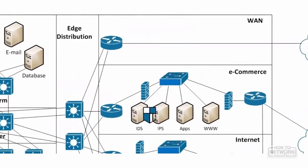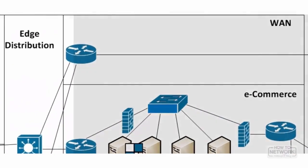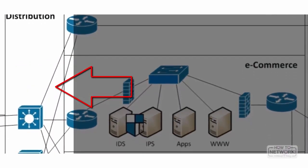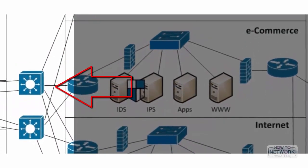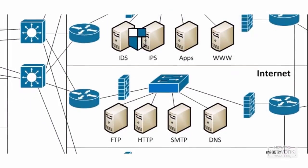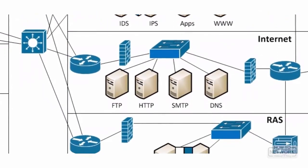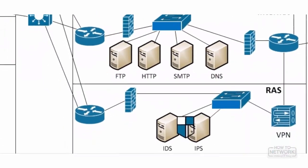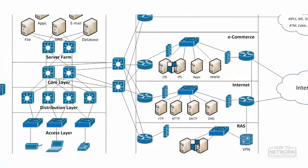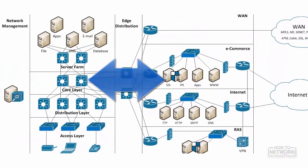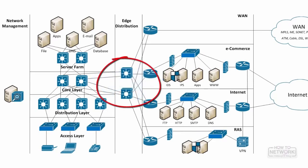The enterprise edge is the demarcation point between internal and external facing networks, with redundant switching infrastructure connecting into the core and all externally facing modules. If it's going in or out of the internal network, it passes through the enterprise edge. The enterprise edge connects to the core layer, WAN block, e-commerce block, internet block, and RAS block, so having redundancy and high-performing switches is key.